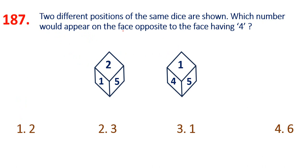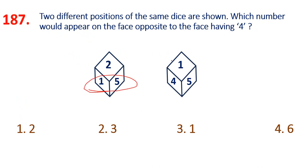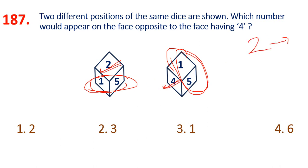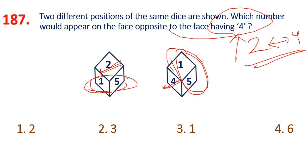187th question: look at what is on the opposite of 4. Where 4 is on one face, something else is on the other. What is common in both — 1 and 5 are common. The opposite of 2 is 4, and the opposite of 4 is 2. So what is on the opposite of 4? It is 2. Option 1 is the answer — simple.